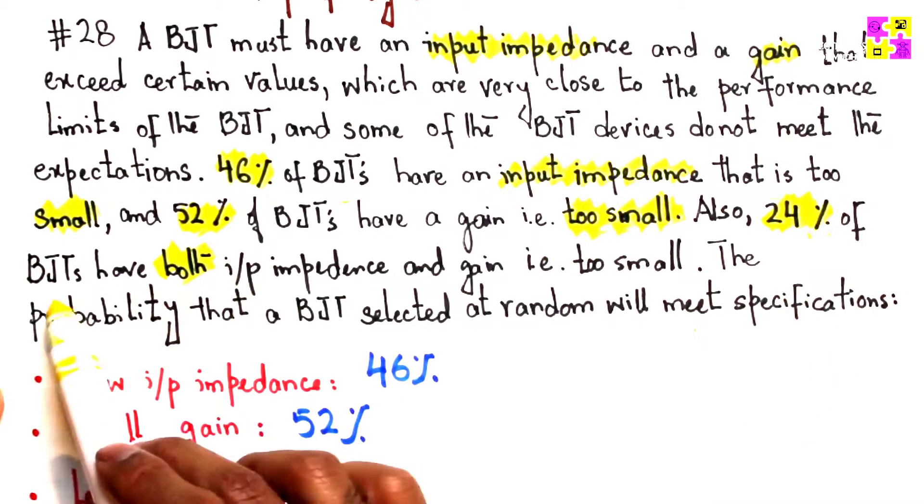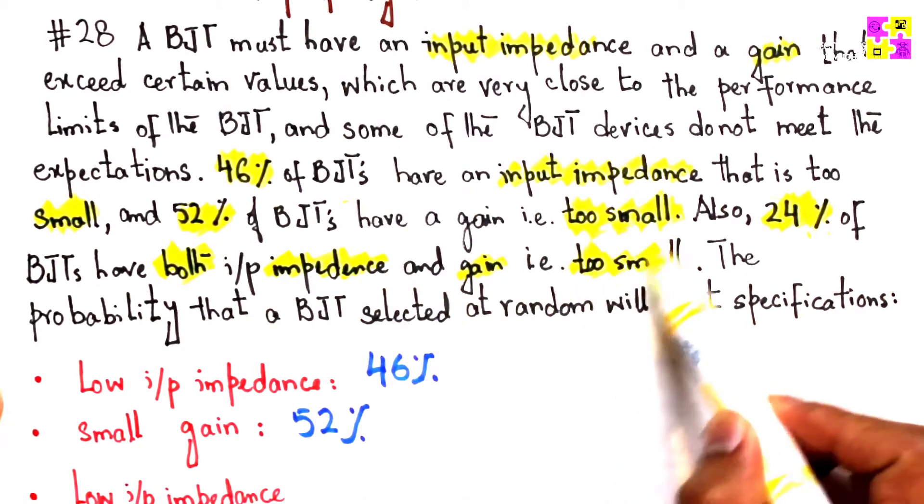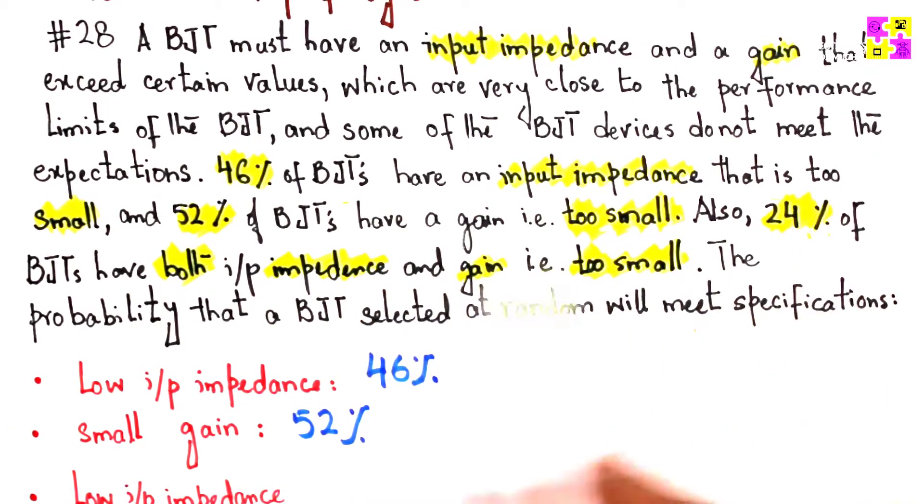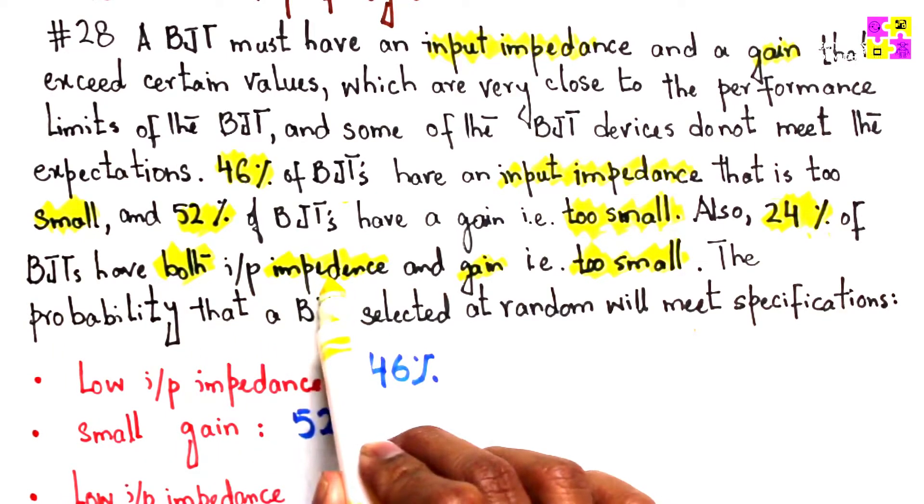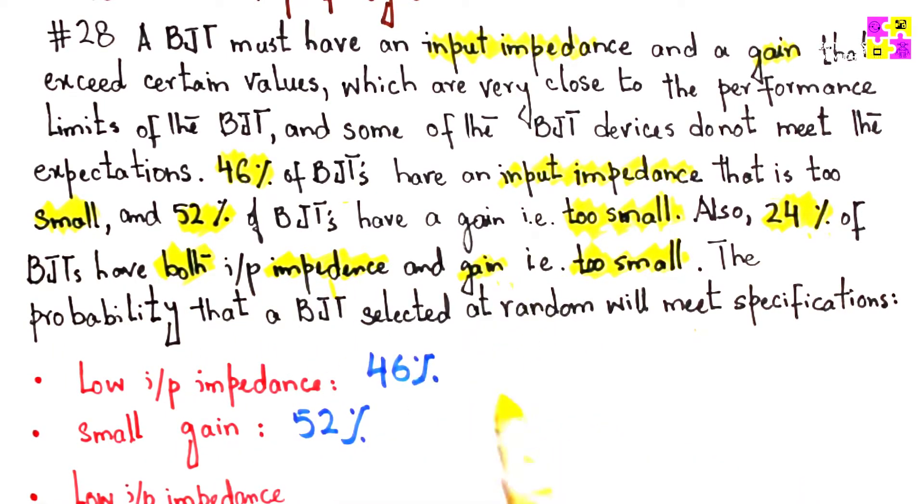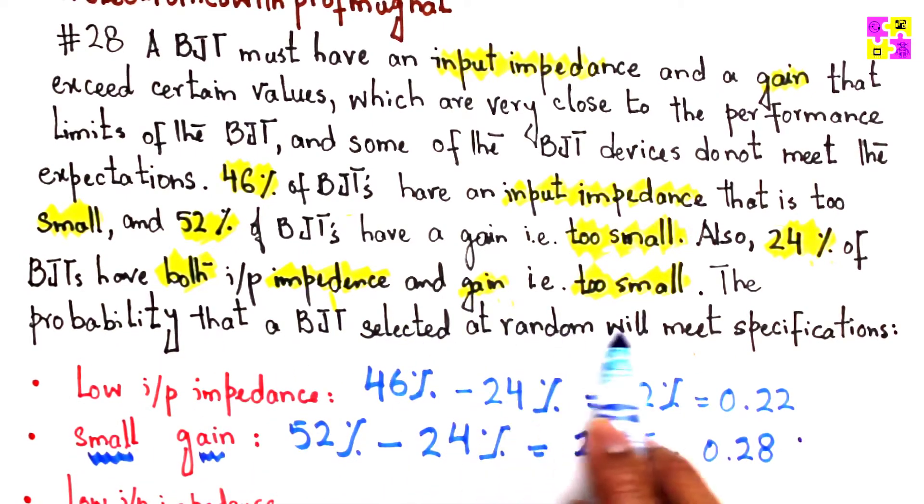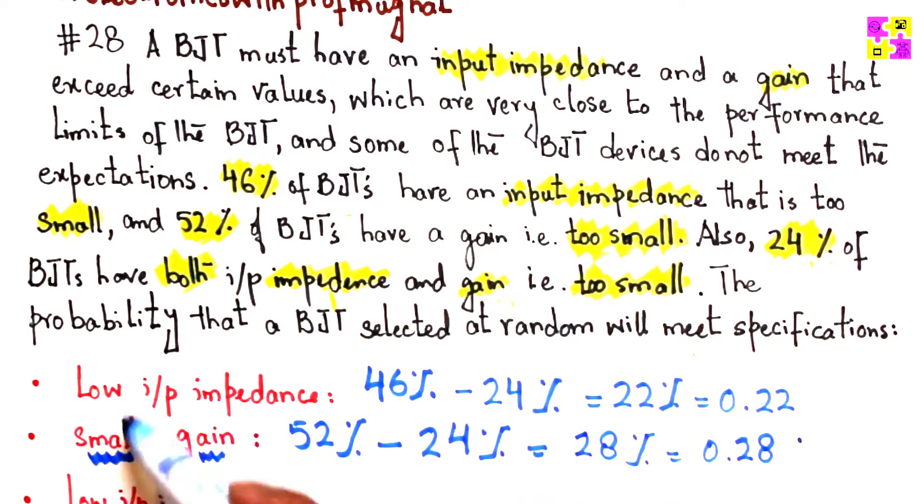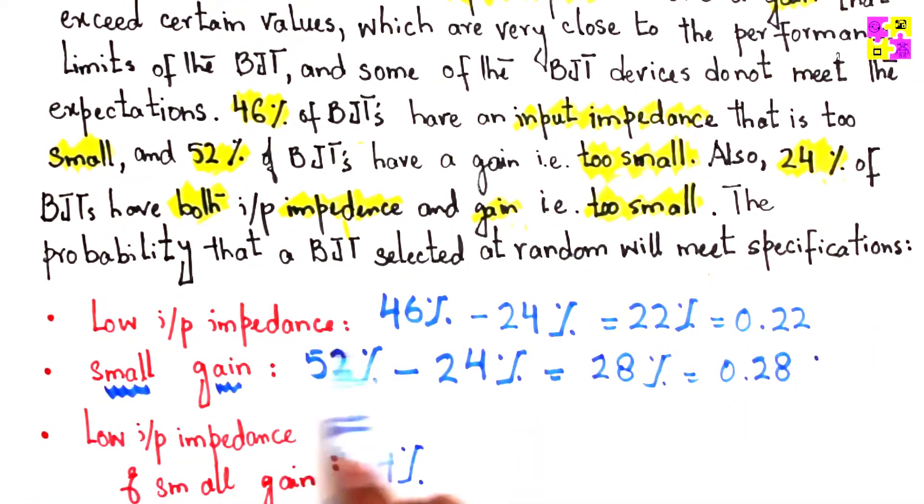Also, 24% of the BJTs have both. This is important: 24% have both input impedance and gain being too small. What is the probability that a BJT selected at random will meet specifications?